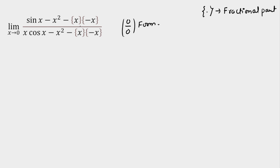Whenever fractional part or greatest integer function is present, we always check the left-hand limit and right-hand limit, because these functions cause behavioral changes. So the first thing I'm going to check is the right-hand limit, that is x tending towards 0 positive. A key hurdle is that fractional part of x is manageable, but fractional part of minus x is tricky — today I'll show you how to handle it whenever you see it.